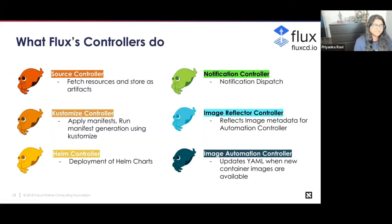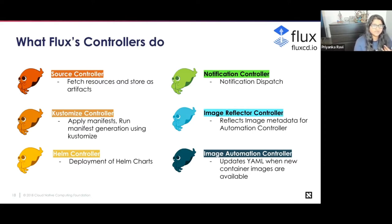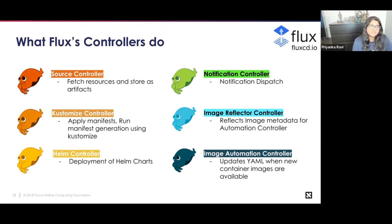Now I'm coming back to what the actual Flux controllers do. The first one is the source controller — what it does is it fetches resources and stores them as artifacts. At its core, the source controller is continuously monitoring the Git repository and looking for any changes, then pulling in those artifacts and storing them. The kustomize controller actually applies these manifests and runs manifest generation using Kustomize.